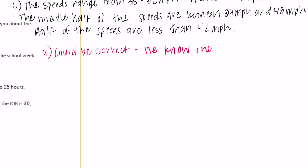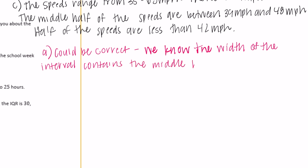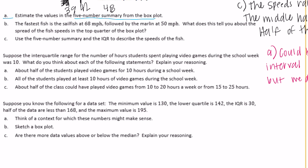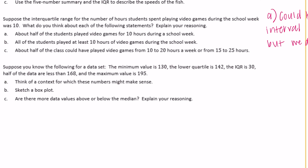We know the width of the interval is 10 and that it contains the middle half of the data, but we don't know where it starts or stops. So saying they played for 10 hours during a school week - it could be true, could not be true, as long as it falls within the range where the IQR is 10.